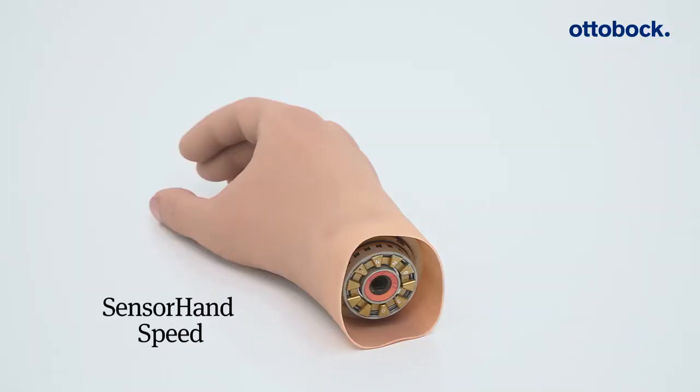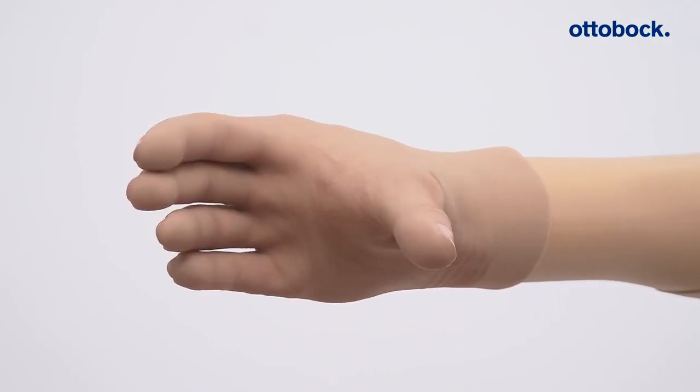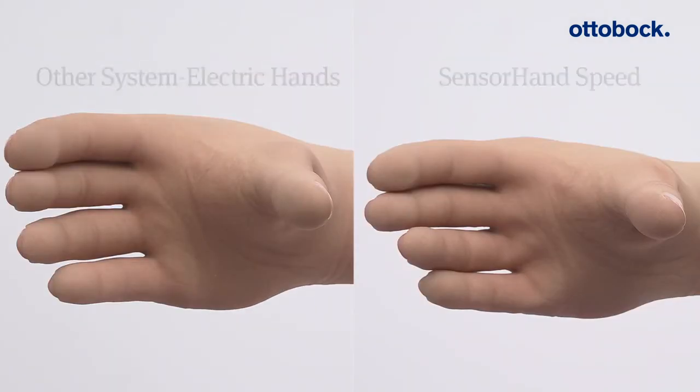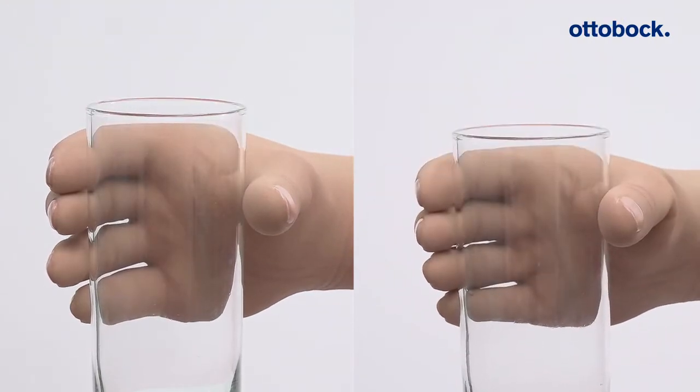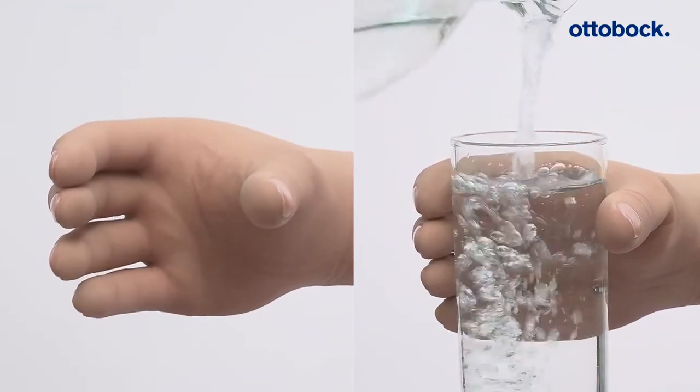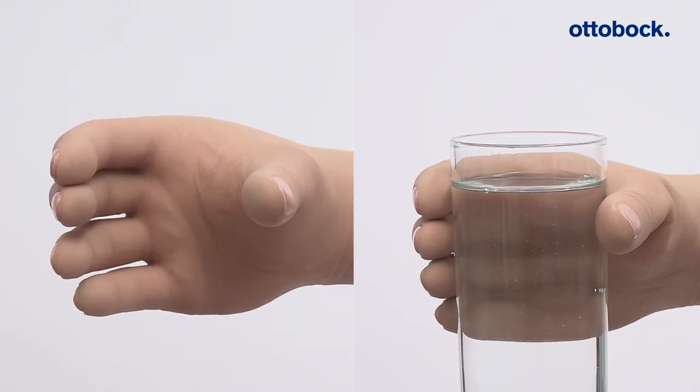The Sensor Hand Speed offers the same functionality as the VariPlus Speed hand. The Suva sensor technology integrated into the thumb instantly senses when a gripped object is about to slip. The Sensor Hand Speed sets new standards in terms of precision, speed, and safety.